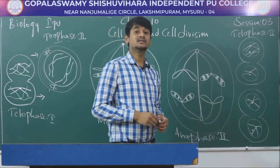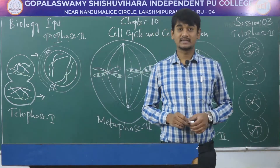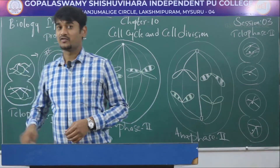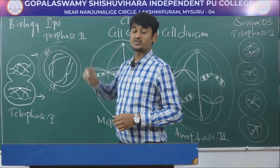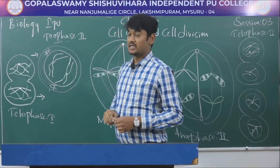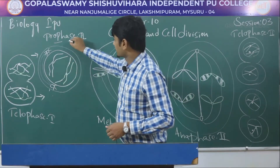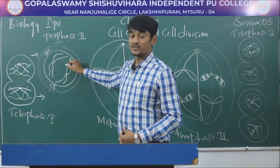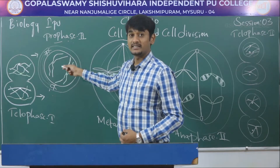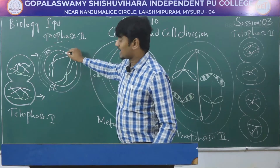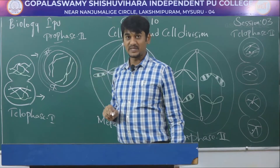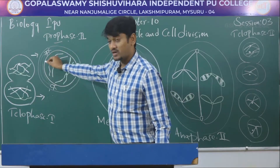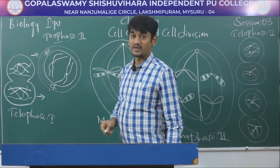Meiosis 2 is called equational cell division because it resembles mitosis. In prophase 2, the immediate stage after cytokinesis, the diploid chromosomes are condensed — the chromosomes start to condense. The nuclear membrane and nucleoli disappear, and spindle fibres are formed and appear.